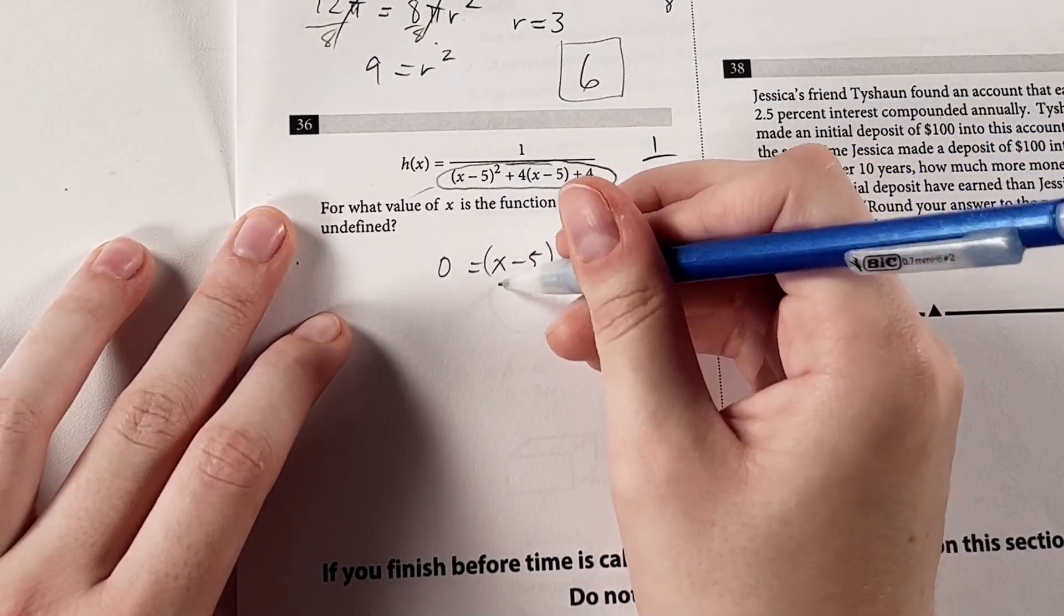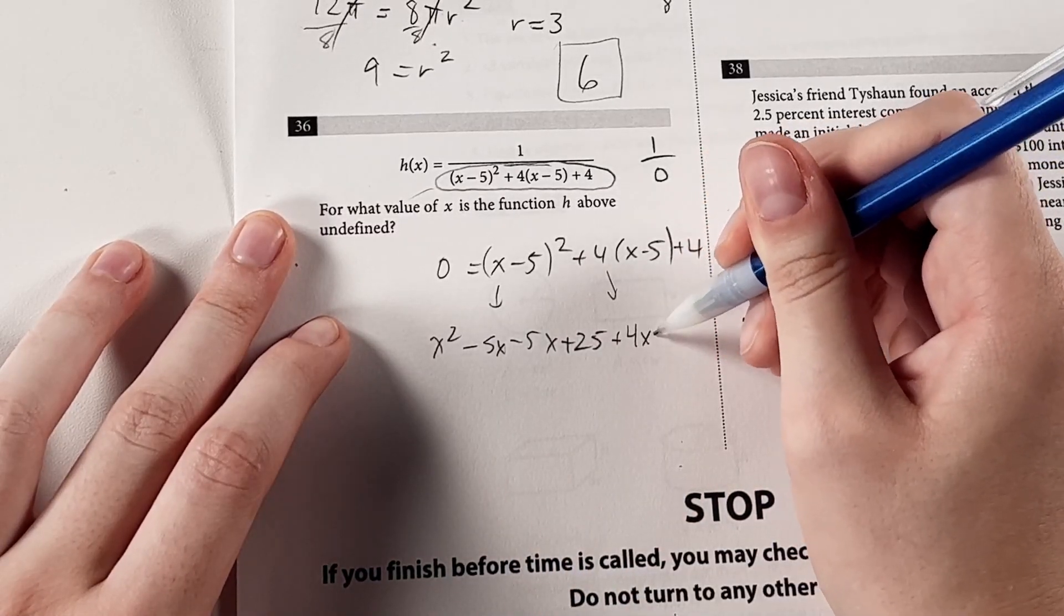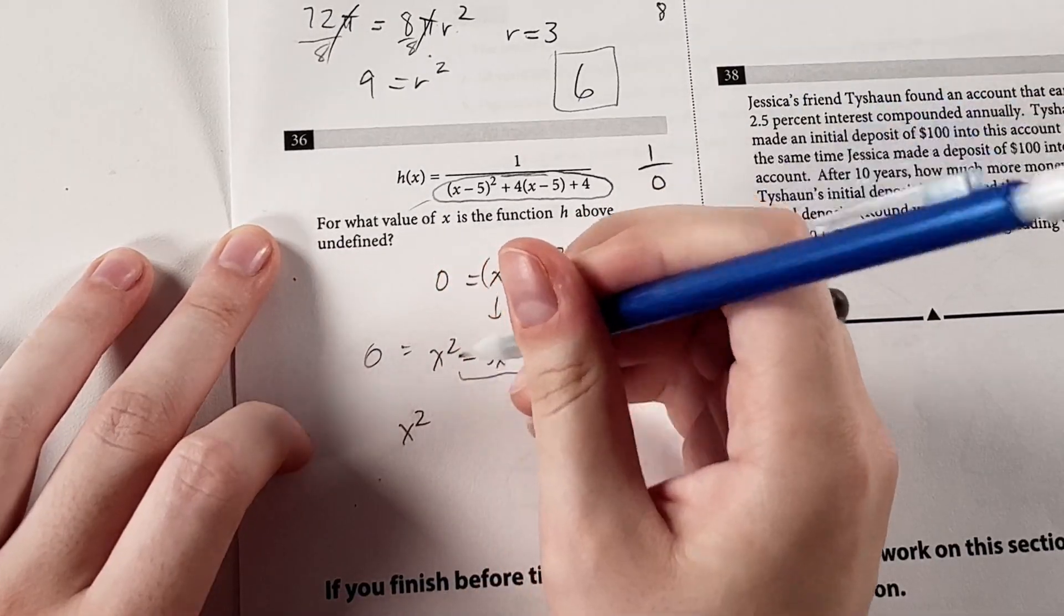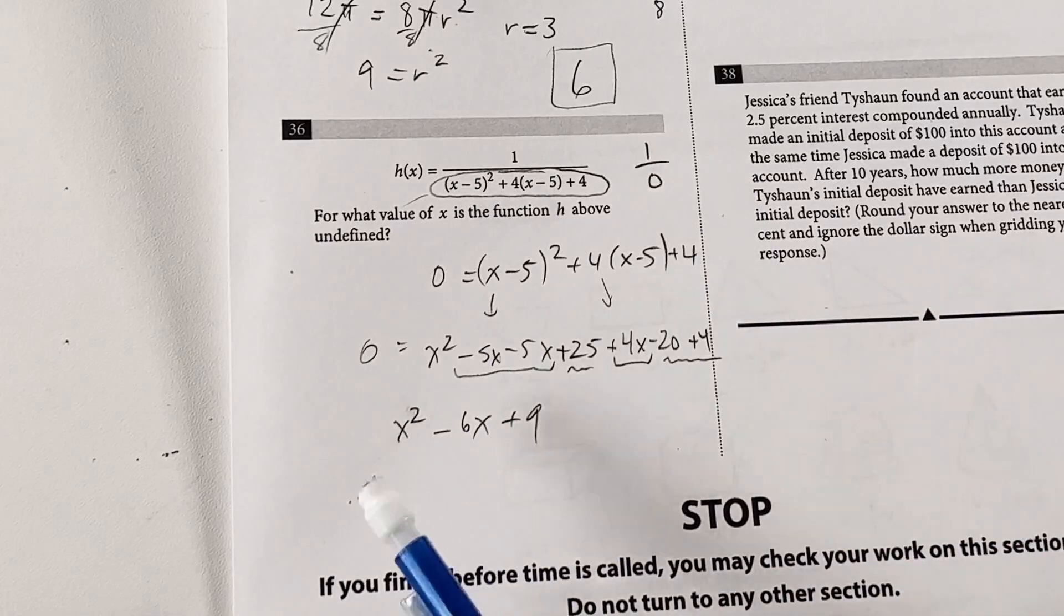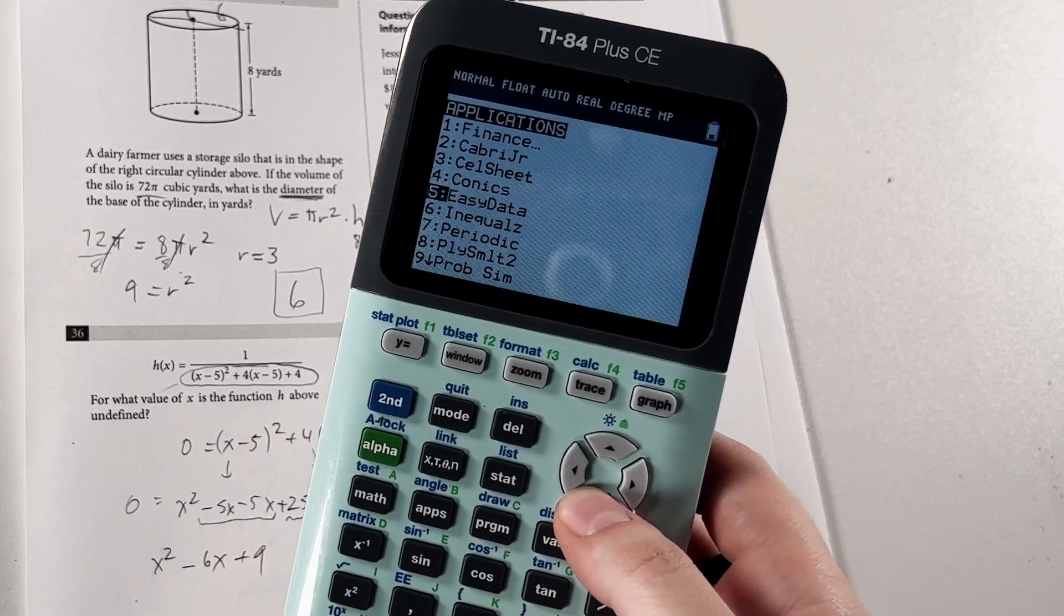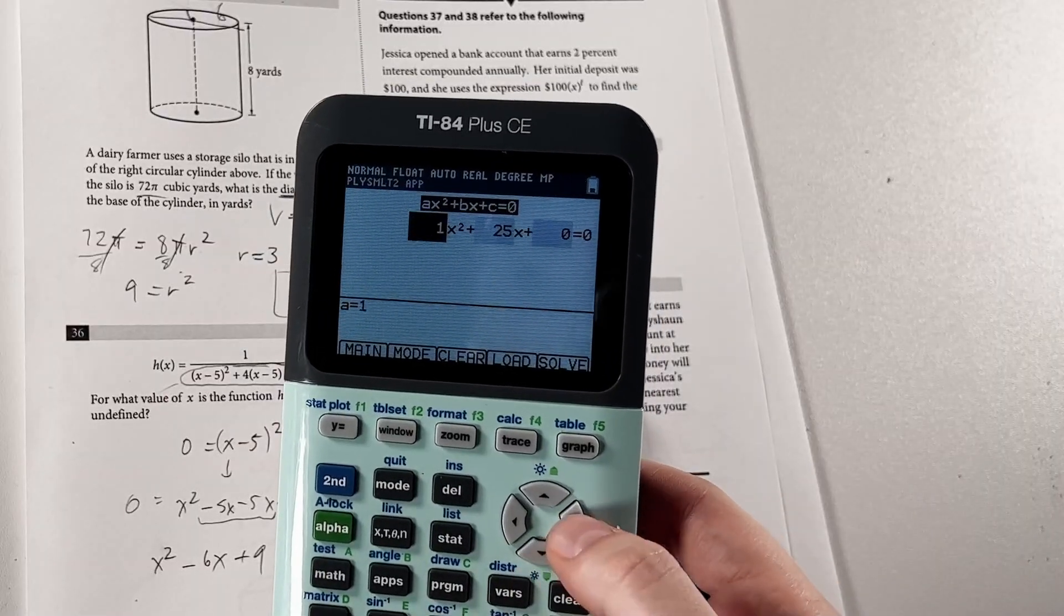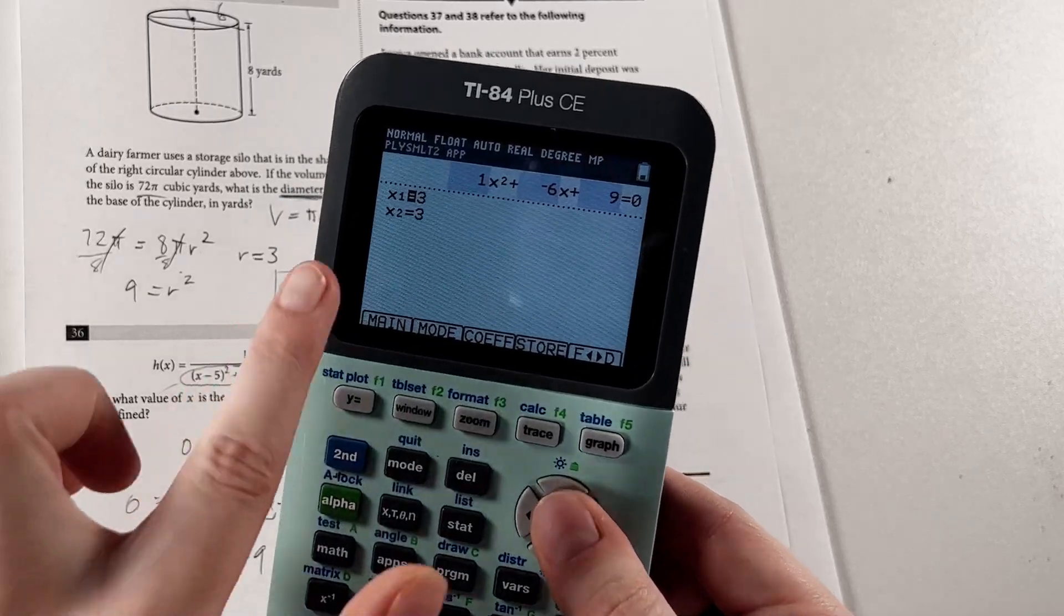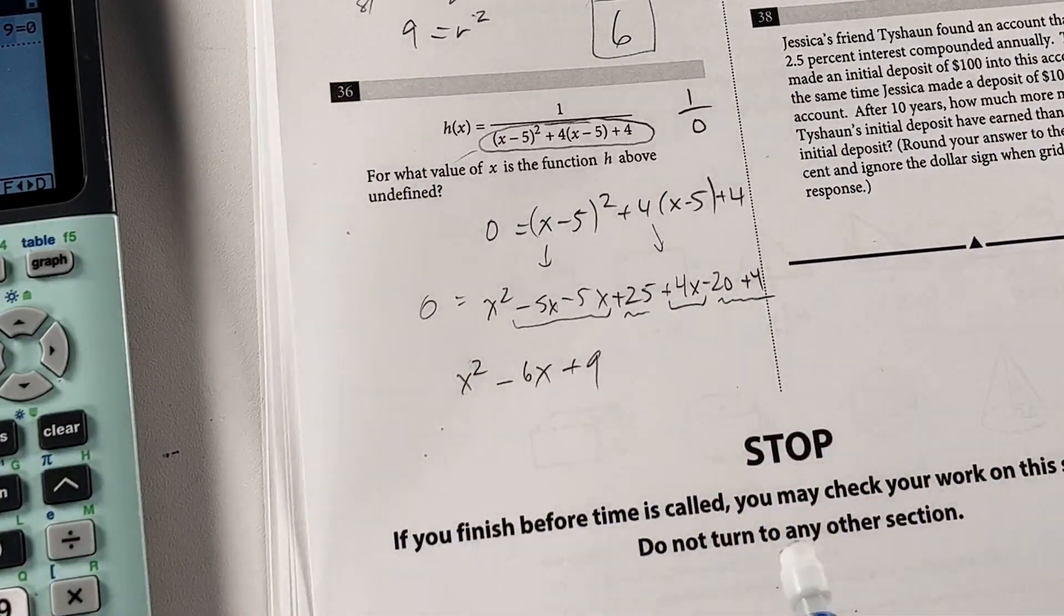So if we expand this out, x squared minus 5x minus 5x plus 25, then we have plus 4x minus 20 plus 4 equals 0. And then we combine everything that we can. So we have x squared minus 6x plus 9. And it's pretty easy to factor this one quickly using the x method. But now's a good time to also tell you guys about my little calculator trick that I like. So if you go to apps in your calculator and go to number 8 on the applications, go to polynomial root finder, you'll be able to type in this equation with your coefficients like this, hit solve, and it'll give you your values of x. And in this case, we see that it's 3 and 3, which is good because it says value, not values of x. So 3 is our answer here using our handy dandy little calculator.